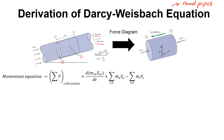Another force we need to consider is shear stress force. This force is a result of friction between the walls of the pipe and the fluid. Shear stress force is equal to shear stress τ₀ times the surface area of the cylinder. The surface area is the circumference of the circle times the length of the cylinder, so A equals π times D times delta L.